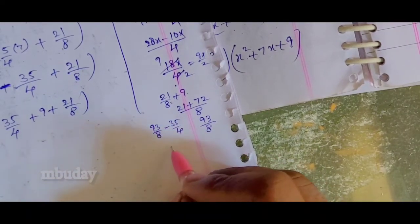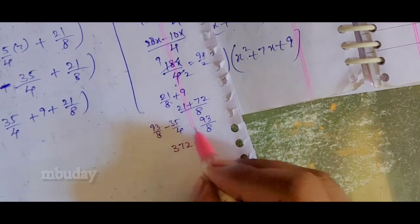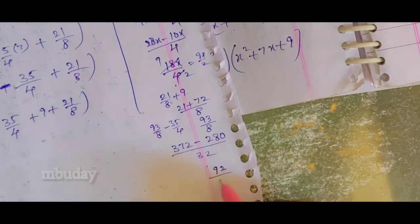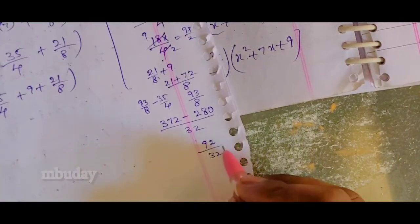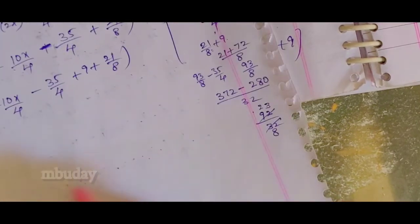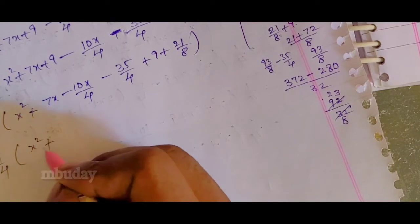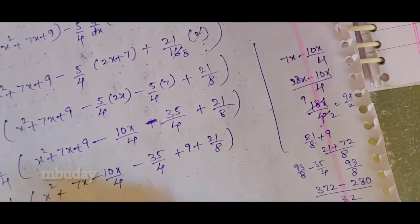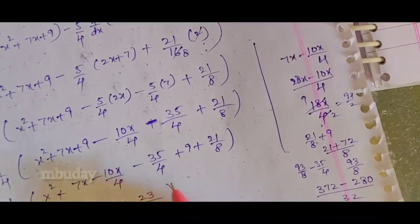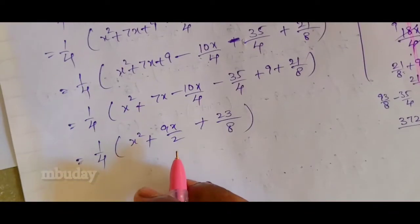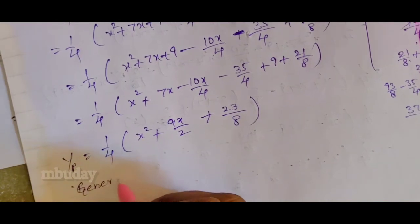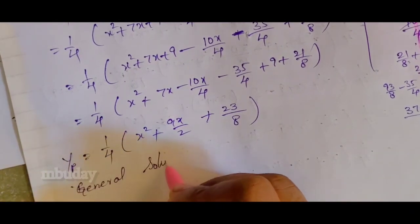So the particular integral simplifies to 1 by 4 times (x squared plus 9x by 2 plus 23 by 8), giving the PI as one-fourth times that expression.